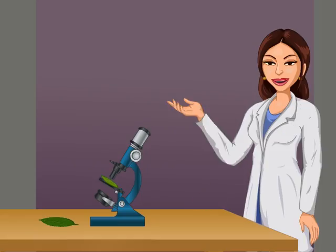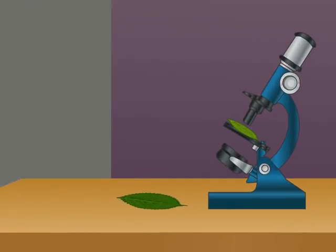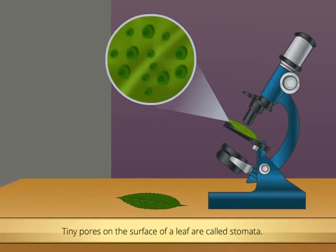If you see a leaf through a microscope, you will observe tiny pores on the surface of the leaf. These tiny pores are called stomata.